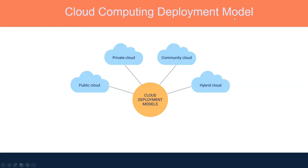Cloud computing deployment models include public cloud, where everyone can deploy their resources — for example, AWS and Azure. We have private cloud, where only the company can deploy its resources — for example, Toyota has their own cloud. We have community cloud, which is a collaboration of two or three companies sharing access. And finally, hybrid cloud, which is a combination of public and private cloud. Azure provides the experience of hybrid cloud as well.